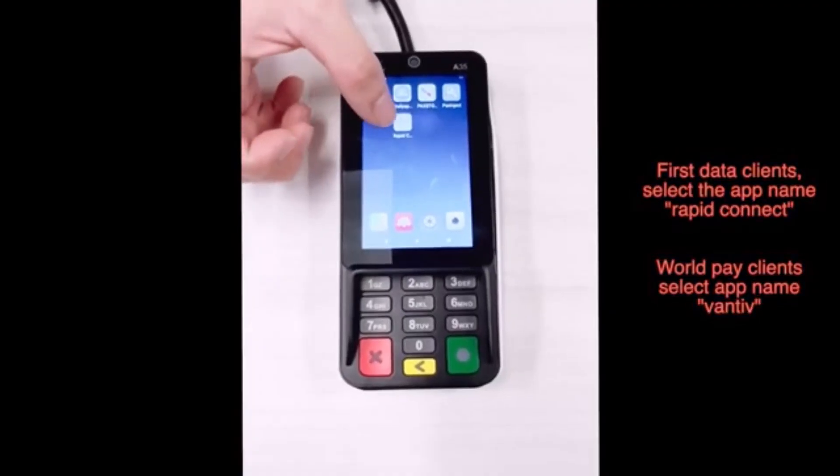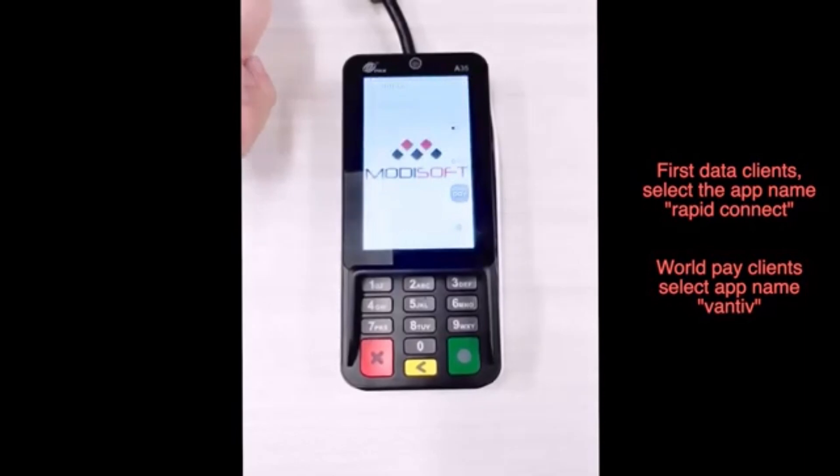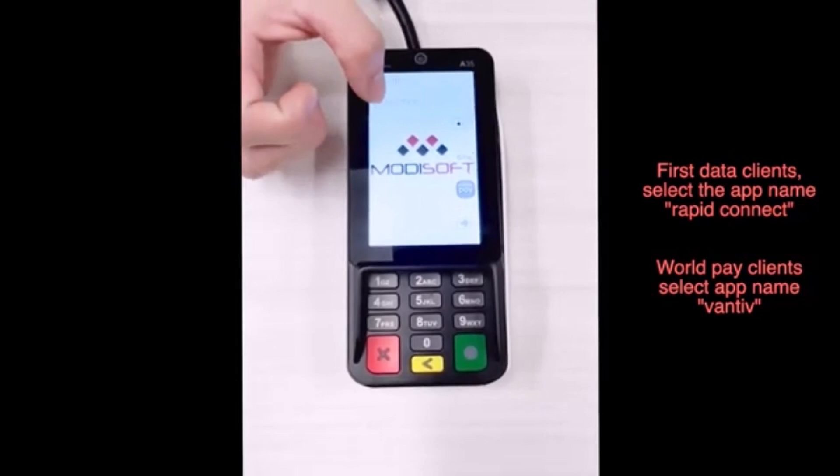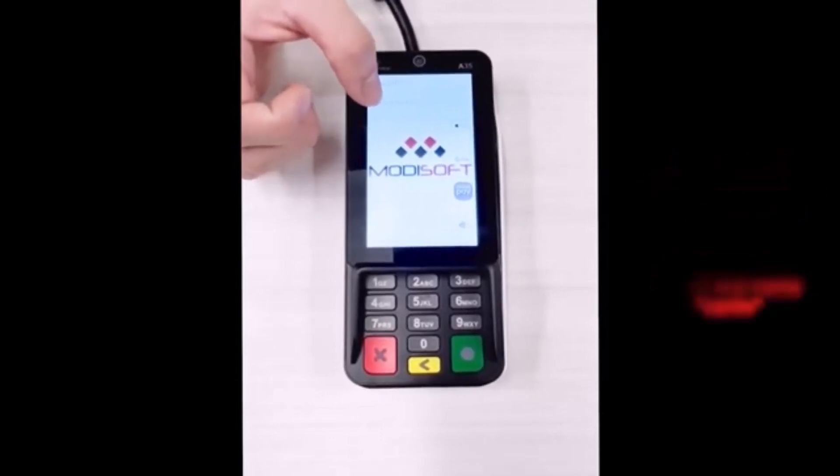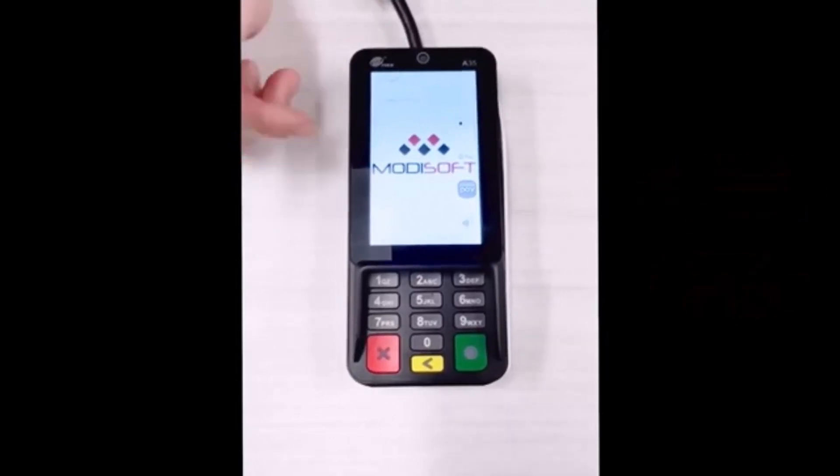In this case, we're on First Data, so we'll go ahead and click Rapid Connect. Once it comes on, you'll notice that the Modisoft logo will appear along with the IP at the top. This is what you're going to be using to input on the MPOS so that you can pair it.